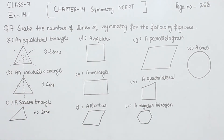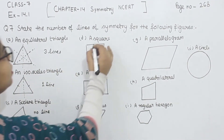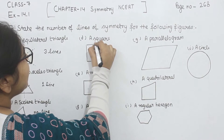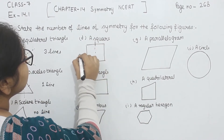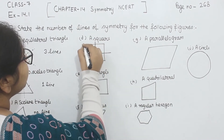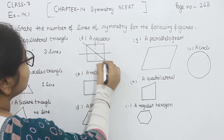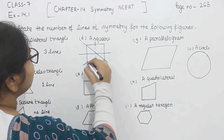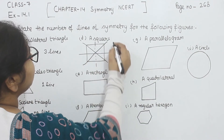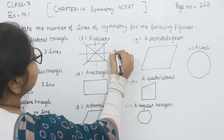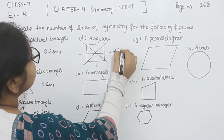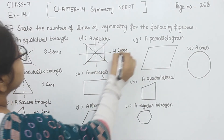Now, comes to part D. In this part D, we have a square. All sides are equal to each other. So this will have one, two, three and four — four lines of symmetry.